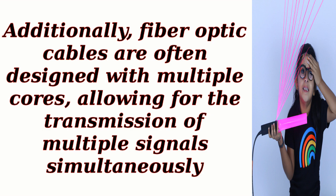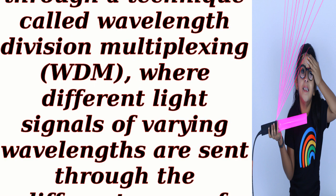Additionally, fiber optic cables are often designed with multiple cores, allowing for the transmission of multiple signals simultaneously. This is achieved through a technique called Wavelength Division Multiplexing (WDM), where different light signals of varying wavelengths are sent through the different cores of the cable.